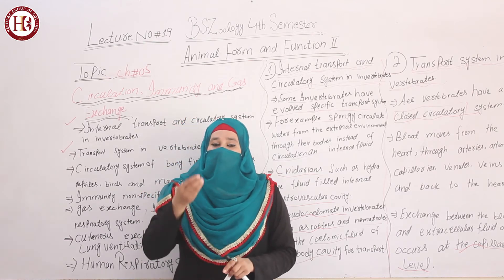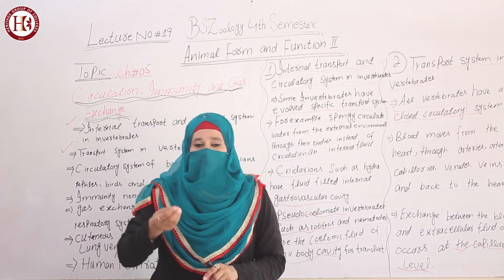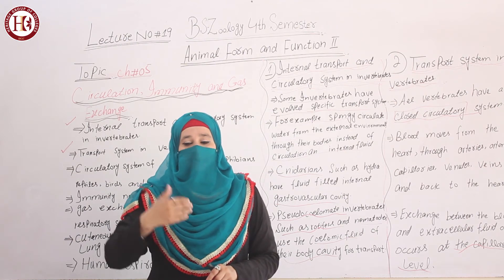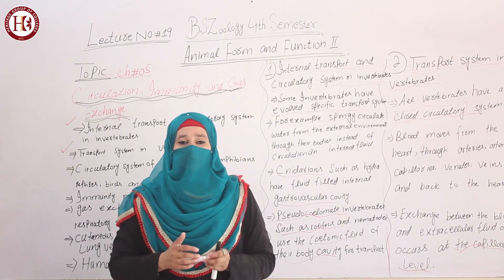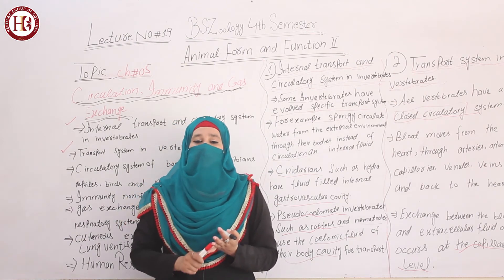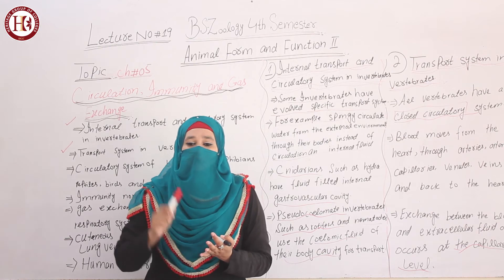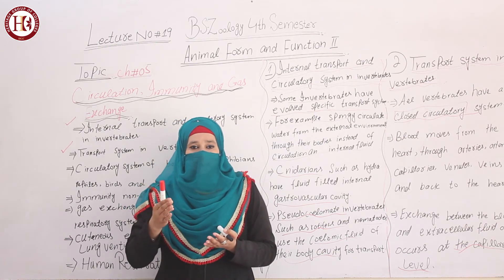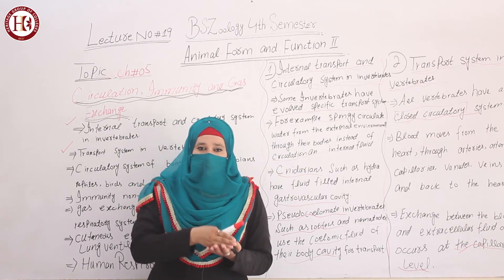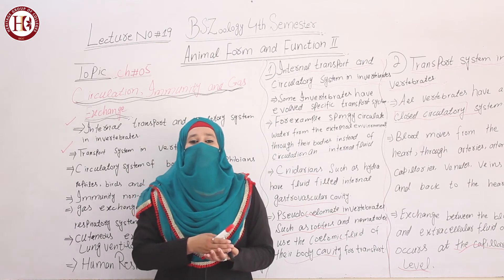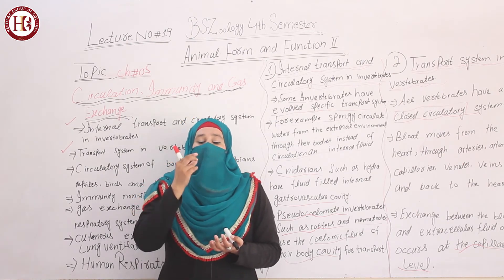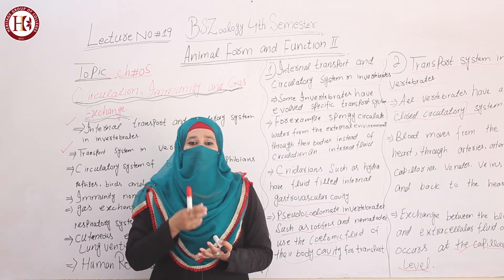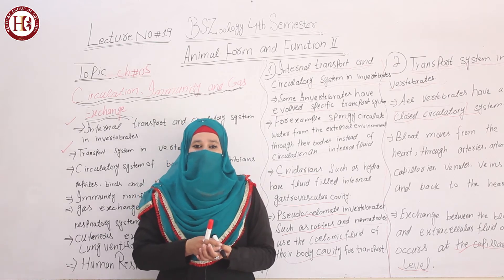Arteries are blood vessels which carry blood away from the heart toward different parts of the body. Veins are the vessels which carry deoxygenated blood from different body parts back toward the heart and lungs. Capillaries are the blood vessels where gaseous exchange takes place.